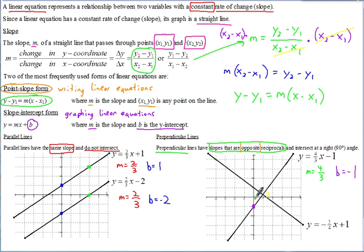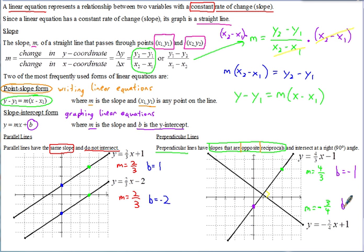From the Y-intercept of negative 1, the slope of four-thirds means you go up 4, right 3. For the other line to be perpendicular, its slope must first be the opposite — since this slope is positive, the perpendicular one must be negative. Then the reciprocal means switching numerator and denominator: instead of four-thirds, it becomes three-fourths. So the perpendicular slope is negative three-fourths.